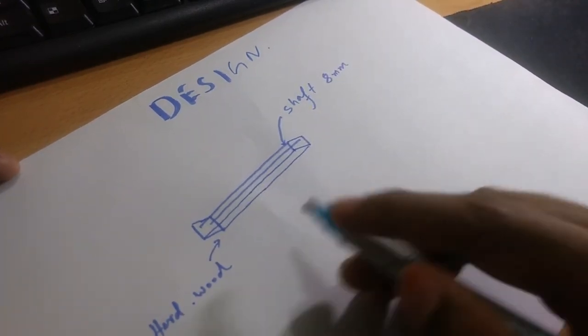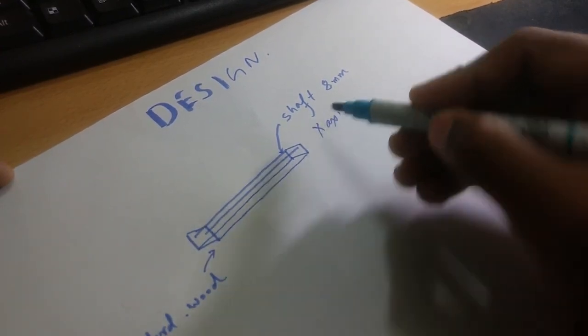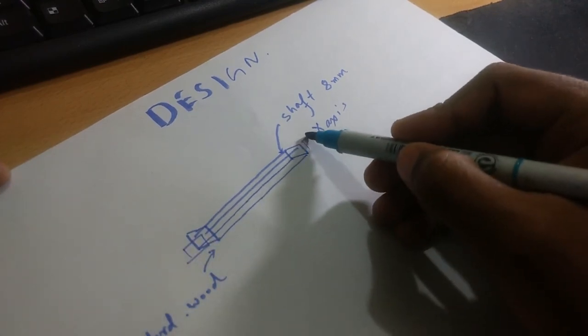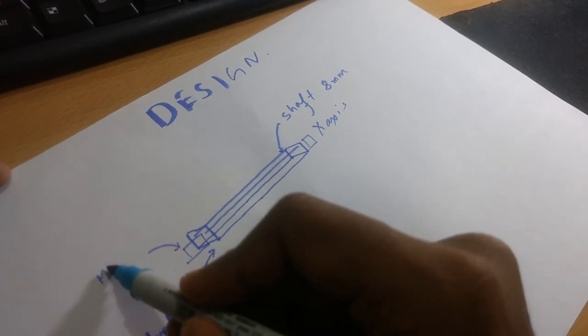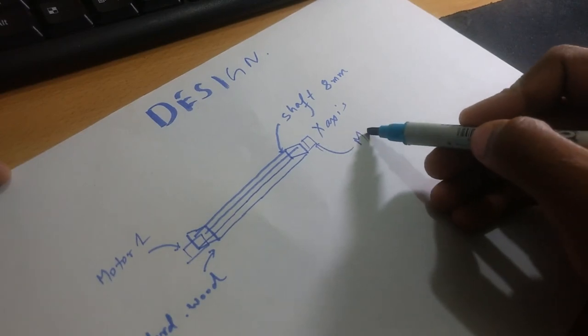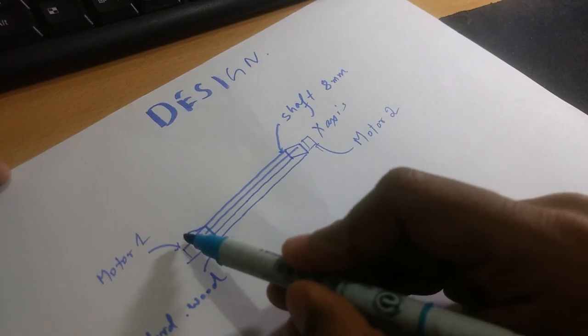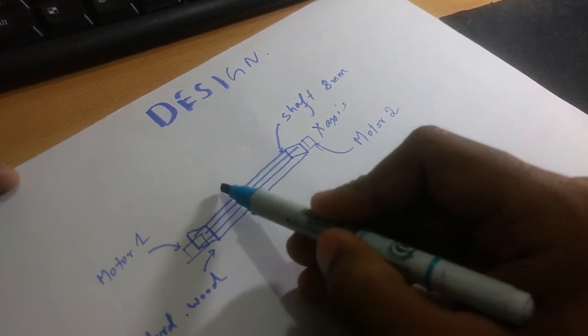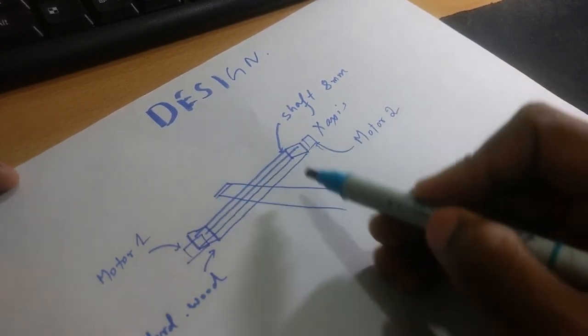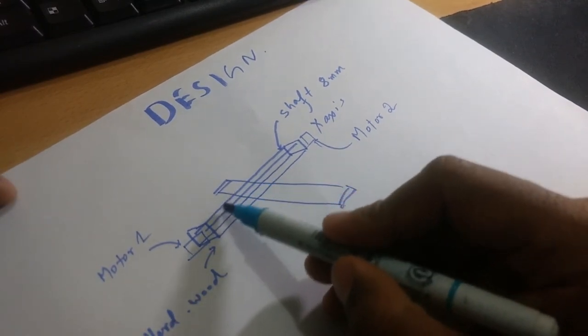Both motors will be here—motor 1 and motor 2. And the Y-axis will be attached perpendicular.